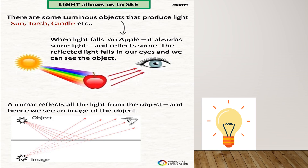Light allows us to see. We have so many luminous objects around us which are producing light, and with the help of that only we are able to observe and identify any object in our surroundings. Whenever light falls on an object, it reflects back. Not all light is reflected — some is absorbed by the object and the remaining is reflected. That reflected light, whatever color it has, is what we are able to see.